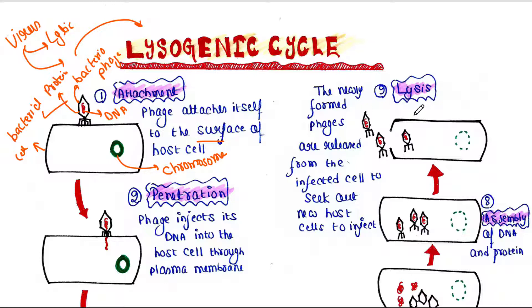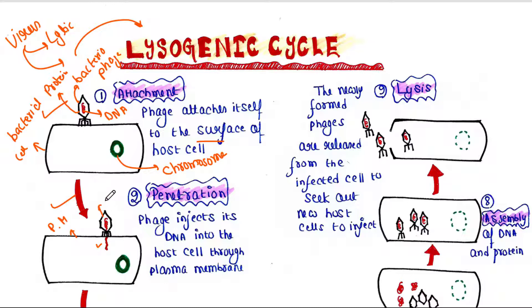The next step is penetration. Here the bacteriophage injects its DNA into the host cell through the plasma membrane. One important thing to notice: the bacteriophage or the virus will not insert its protein coat — only the DNA will be inserted inside the cell.